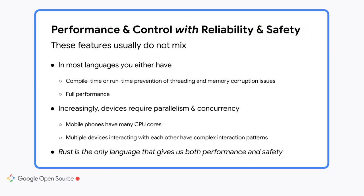Most people come to Rust because of the unique combination of those first two pillars: performance and control with reliability and safety. In most languages, you have to choose one or the other. Languages like JavaScript, Kotlin, and Java have compile-time or runtime prevention of threading or memory corruption issues, but they abstract away your access to the machine. On the other side, the C family of languages provides that access, but with little in the way of safeguards.